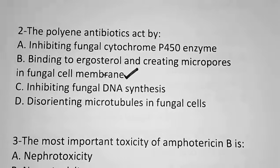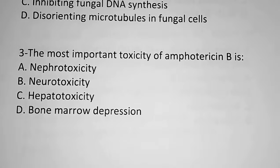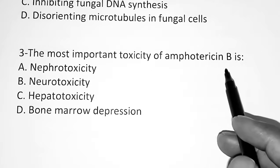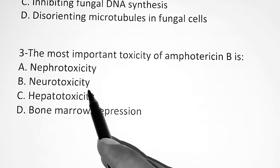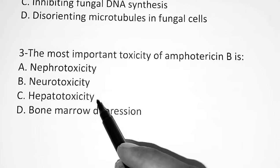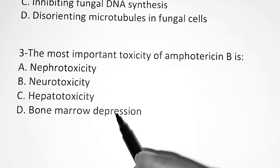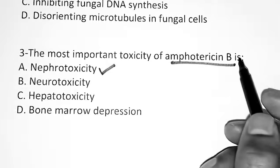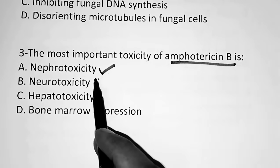The third question: The most important toxicity of Amphotericin B is — Option A, nephrotoxicity. Option B, neurotoxicity. Option C, hepatotoxicity. Option D, bone marrow depression. The correct answer is nephrotoxicity. The most important toxicity of Amphotericin B is nephrotoxicity.